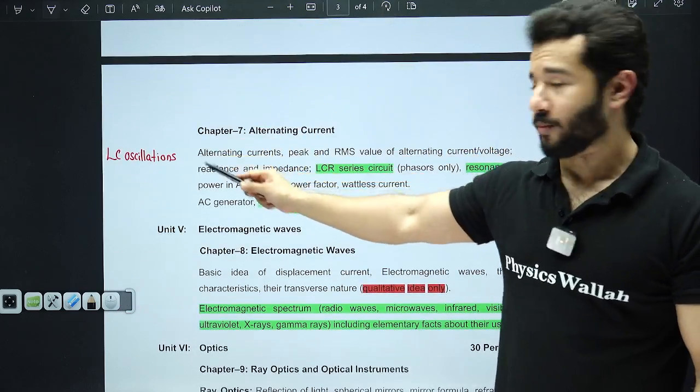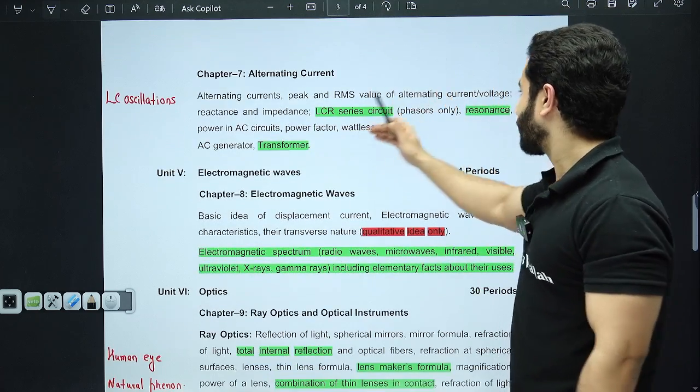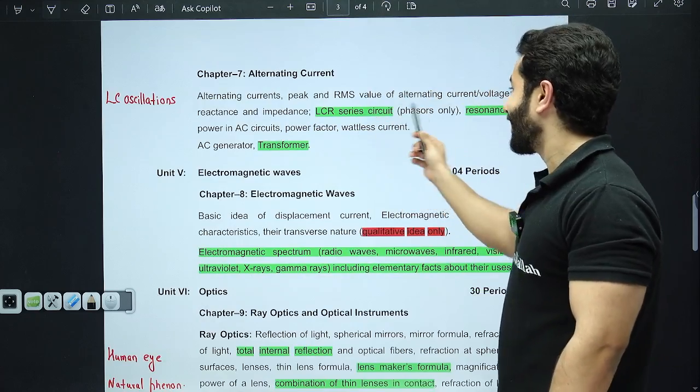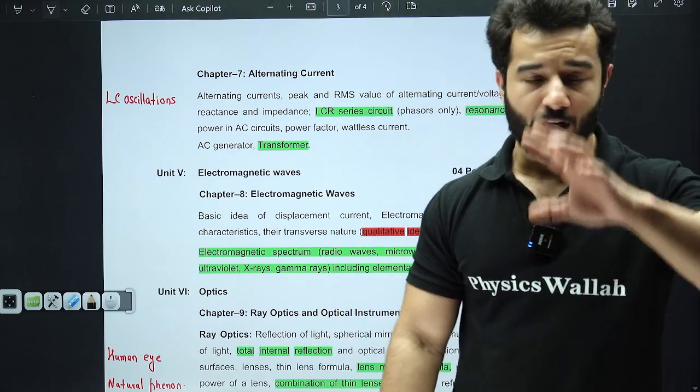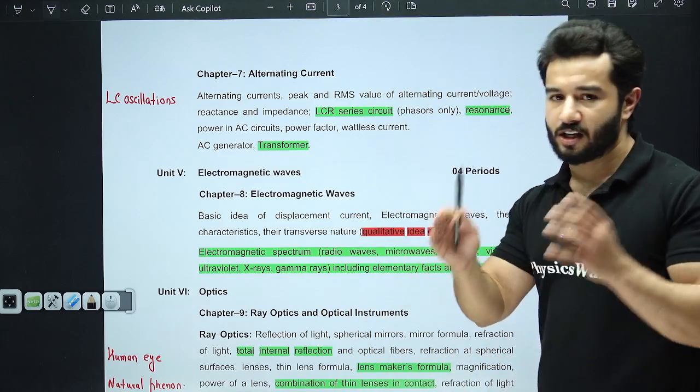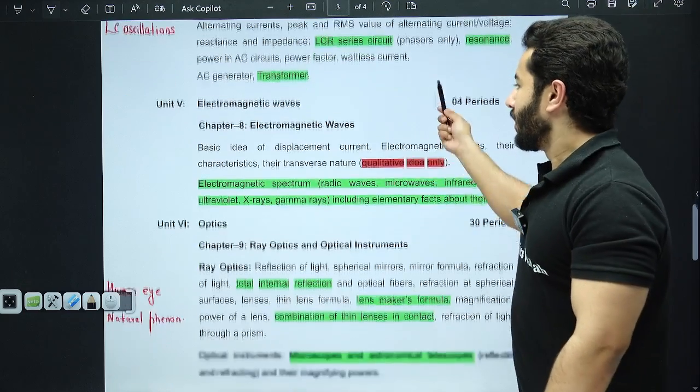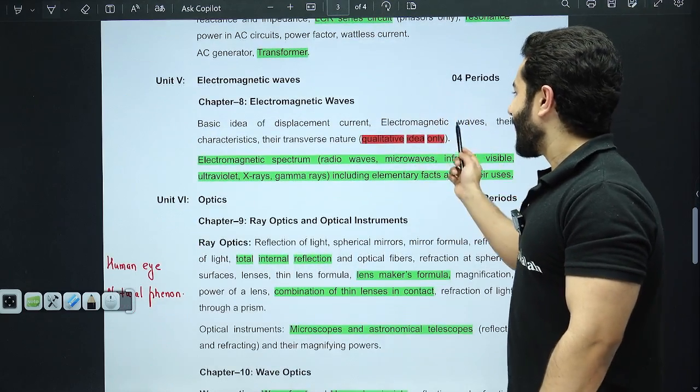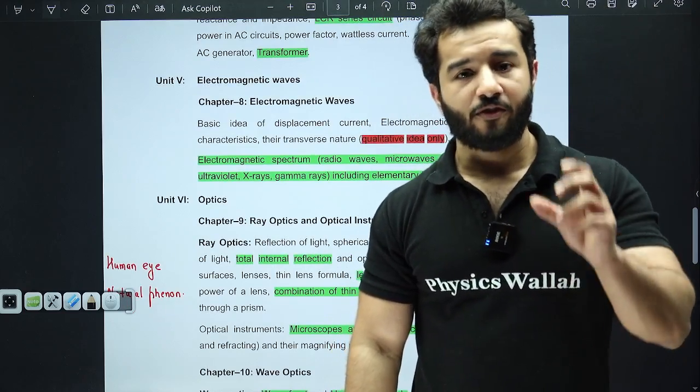From alternating current, LC oscillation has been omitted. Other than that, LCR series circuit is very important, transformer is important, resonance is important. In LCR series circuit, you don't have to worry about finding the derivation or applying KVL. Just remember the phasor diagram, know how to write impedance—that's it, that will do.